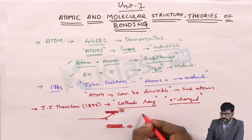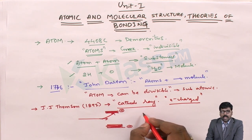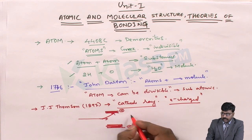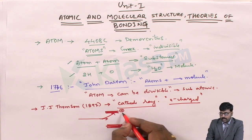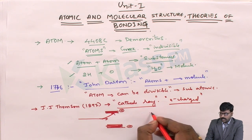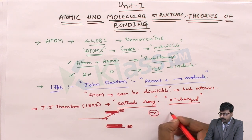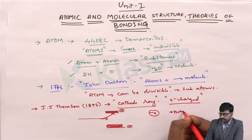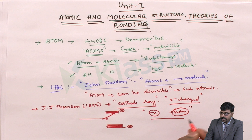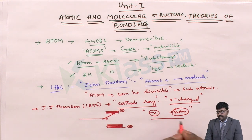Thomson concluded that atoms are made up of tiny particles called corpuscles. He stated that subatomic particles are either negatively charged or positively charged, like neutrons and protons. However, he failed to explain how these particles are arranged inside an atom.